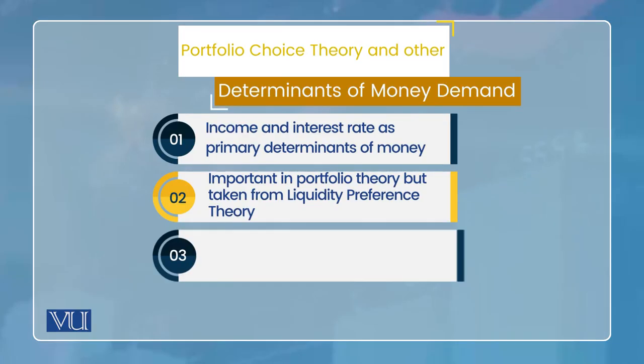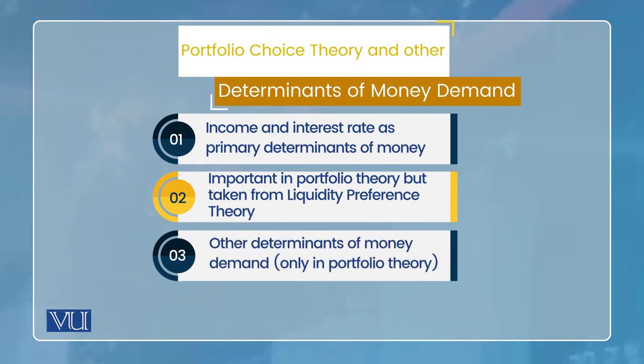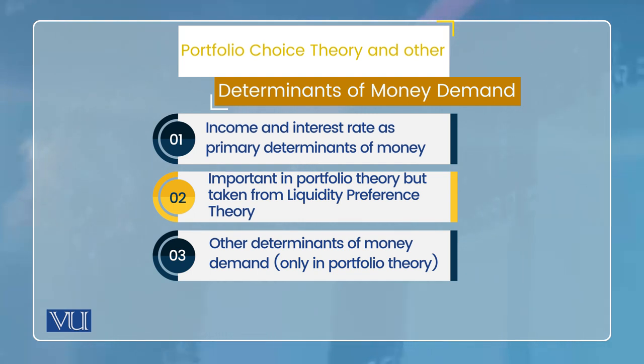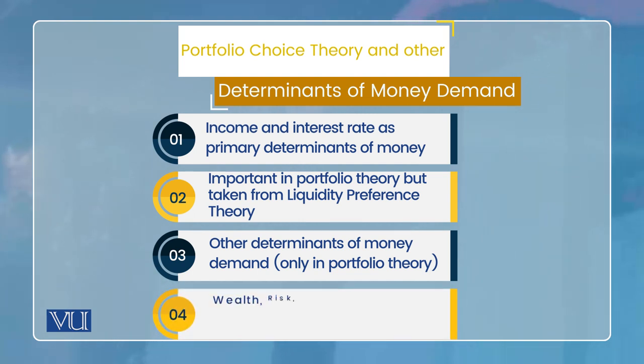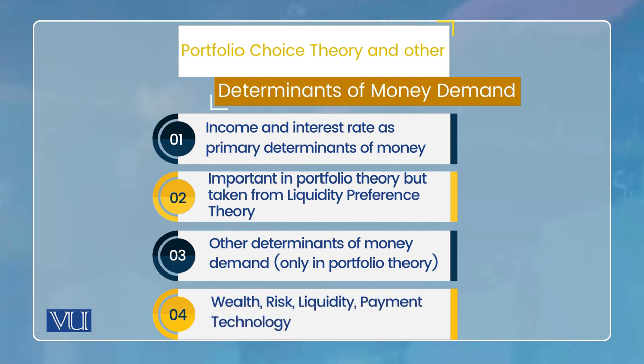Liquidity preference theory mein sirf do determinants the, jo liquidity preference mein the hi nahi — aur woh kya hain? Woh other determinants of money demand hain, aur yeh sirf portfolio theory mein hain, pichli theories mein nahi the. Yeh kaun se hain? Wealth hai, risk hai, liquidity hai, aur payment technology.